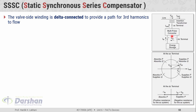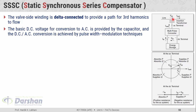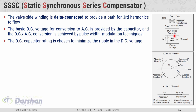The valve side winding is delta connected to provide a path for third harmonic to flow, so that the third harmonic does not go into the system. The basic DC voltage for conversion to AC is provided by the capacitor, meaning the energy storage element could be a capacitor. The DC to AC conversion is achieved by the pulse width modulation (PWM) technique. By choosing an appropriate PWM technique this DC to AC conversion can be done. The DC capacitor rating is chosen to minimize the ripple in the DC voltage.